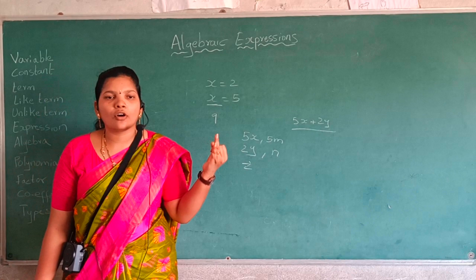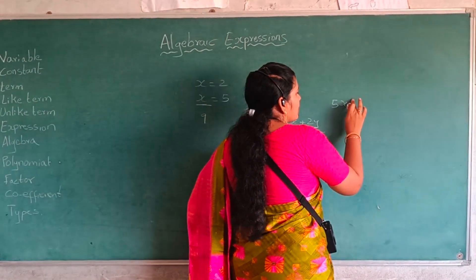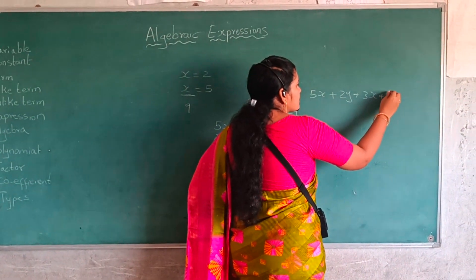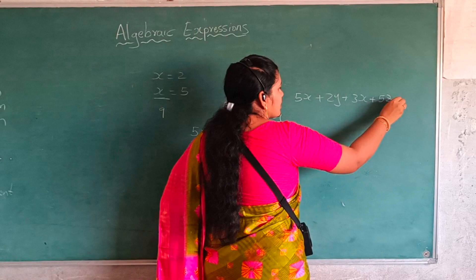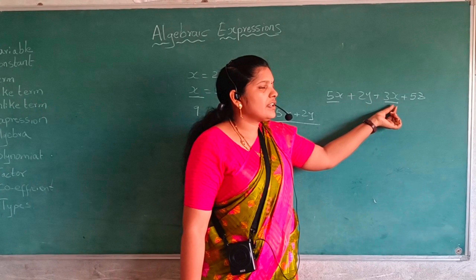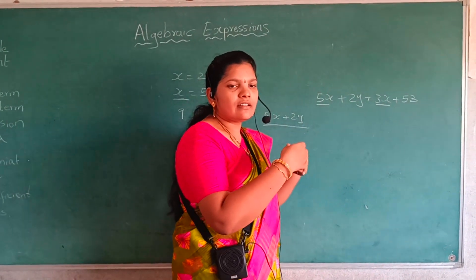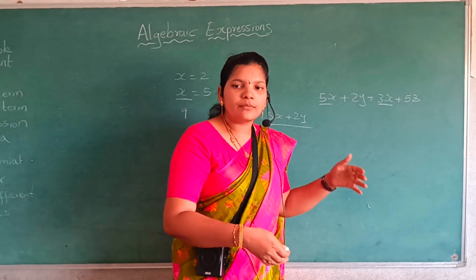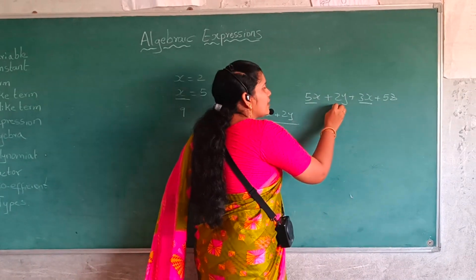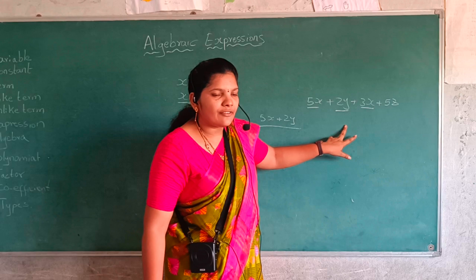And then what are like terms and what are unlike terms? In the expression 5x plus 2y plus 3x plus 5z, here 5x and 3x are like terms — both have the same variable x and x. You can add or subtract them. But 2y and 5x are unlike terms because their variables are different.